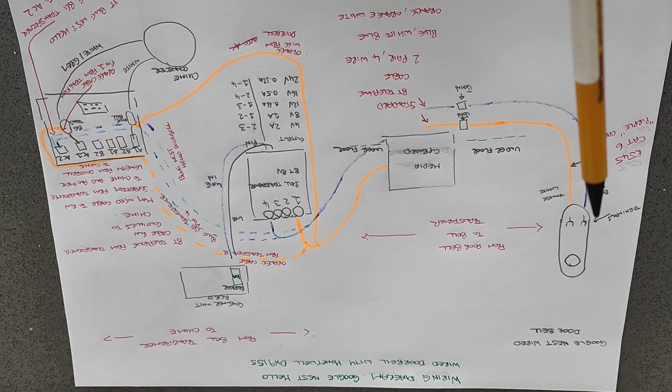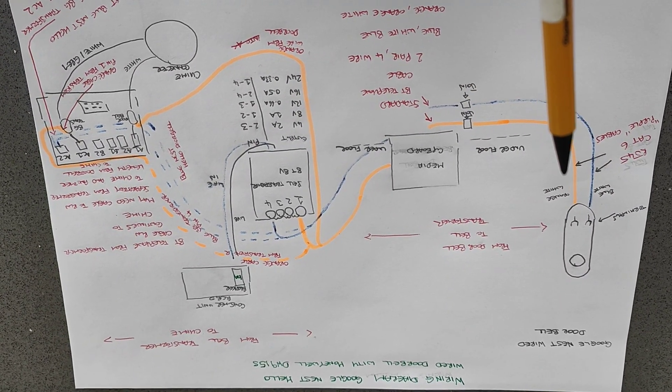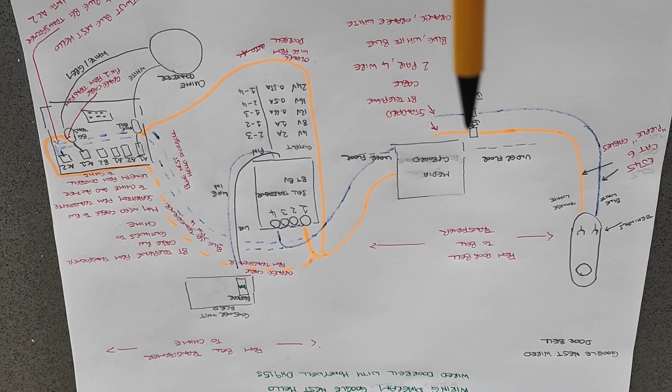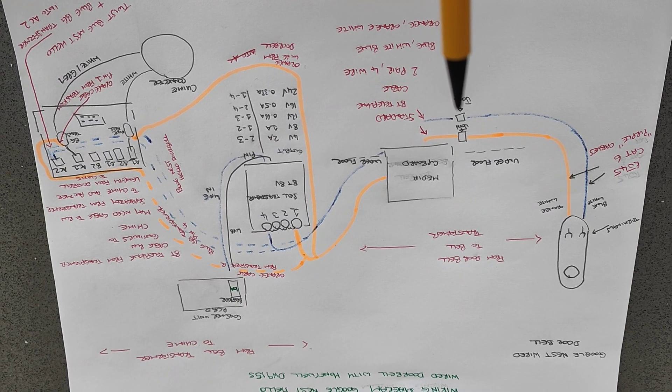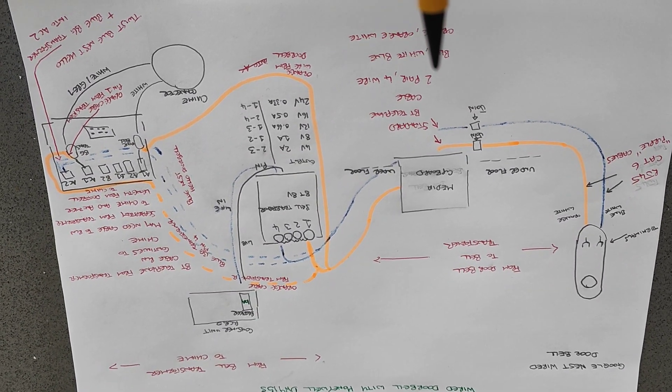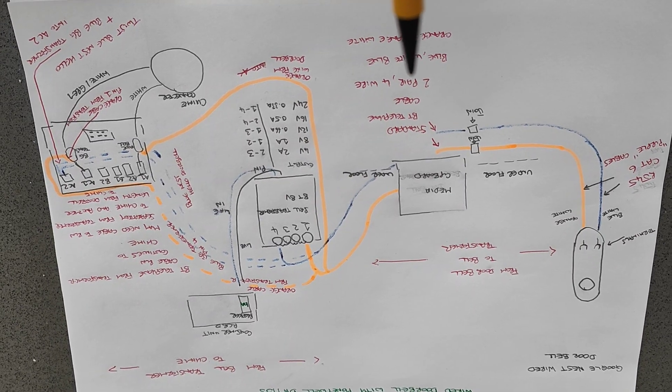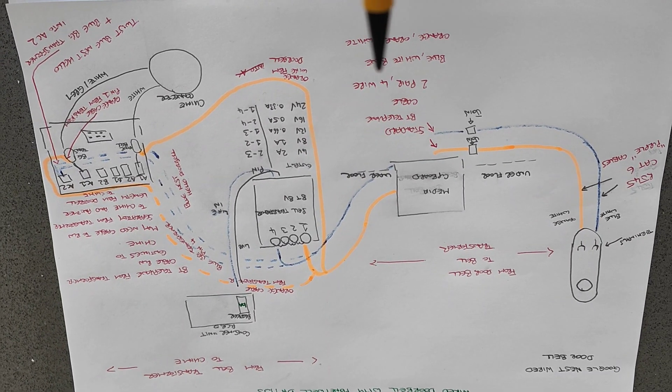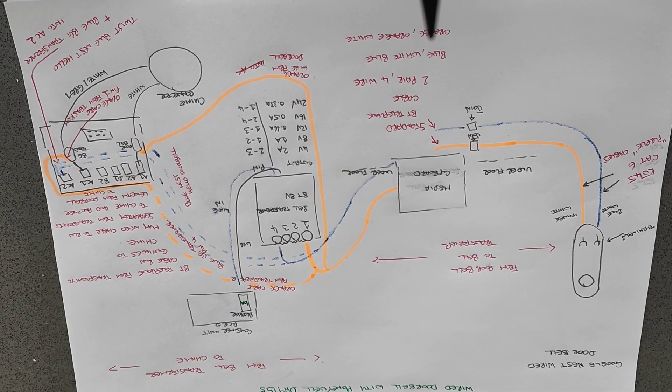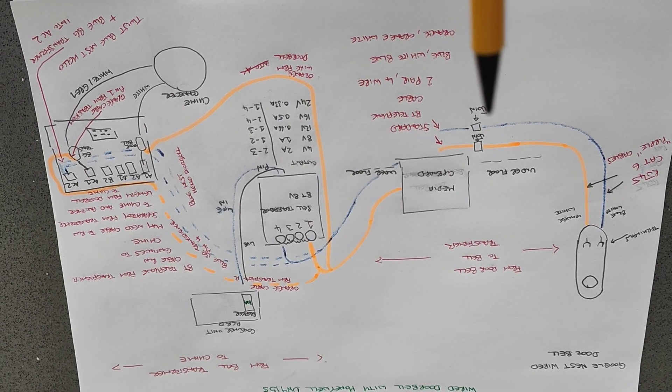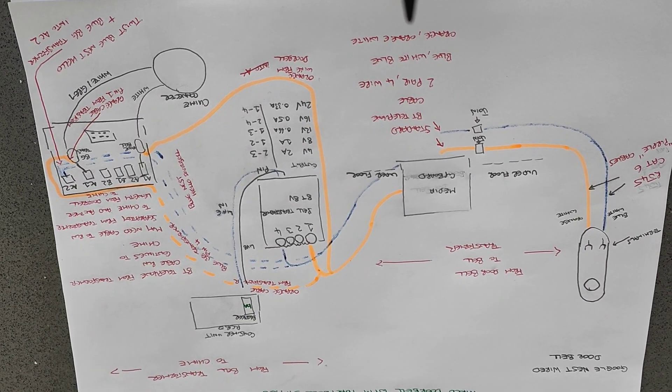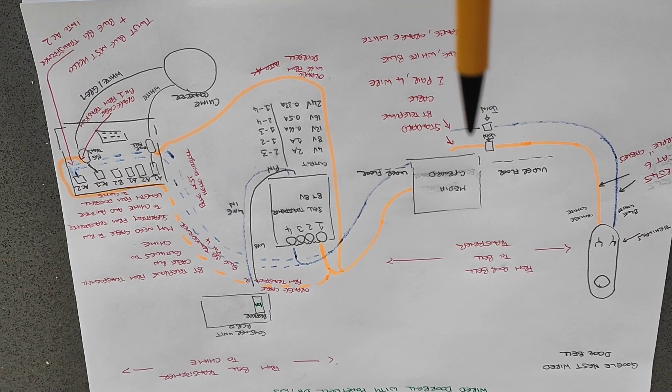So I've taken the blue white and the orange white RJ45 cables to what I call our media cupboard, and I've joined that with a standard BT telephone cable consisting of two pair and four wires. Inside that is a blue cable similar to what you have here, a white, blue, orange and an orange white cable. So I spliced the cable and joined it.